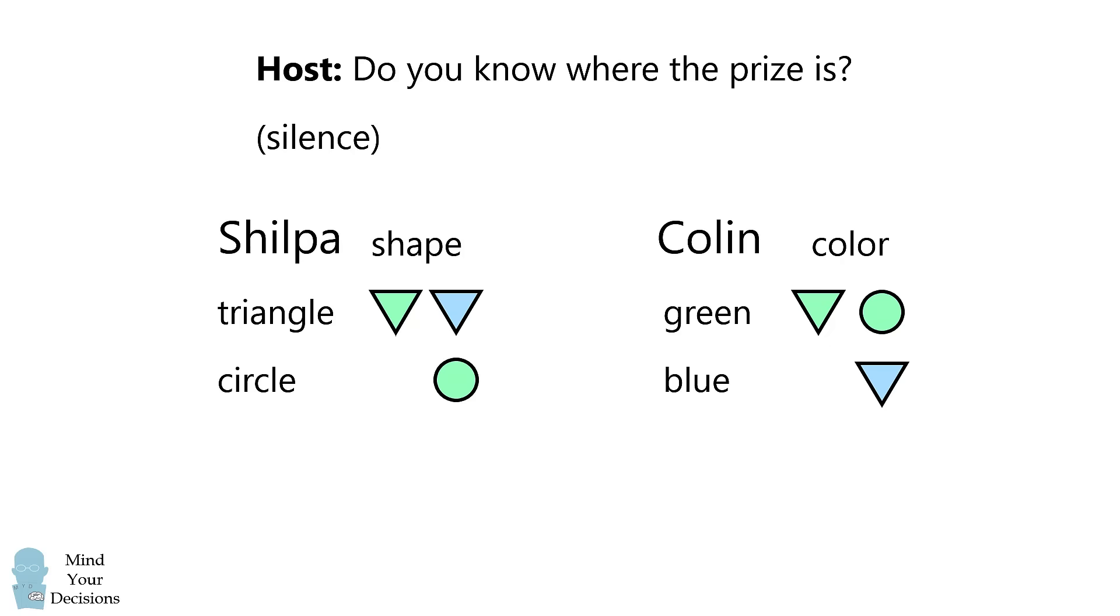So now we go to the second stage of reasoning. Now the host asked, do you know now? Once again, they are both silent. So we can repeat this type of logical reasoning. At this stage, if Shilpa had been told circle initially, the only option would be the green circle. By this stage, she would have known where the prize was. She was again silent. So this is not what she was told initially.